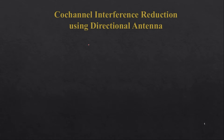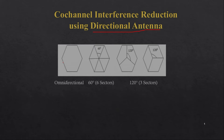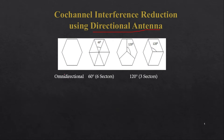Welcome back to the wireless lecture series. In this lecture, I am going to tell you about how we can reduce co-channel interference with the help of a directional antenna. Instead of using an omnidirectional antenna that radiates energy in all directions, we will use a directional antenna that radiates only in some particular direction.